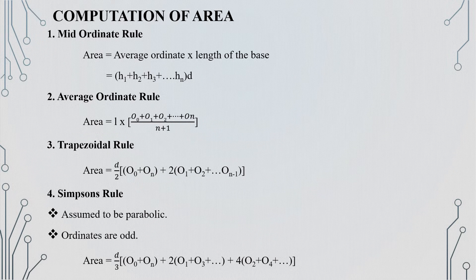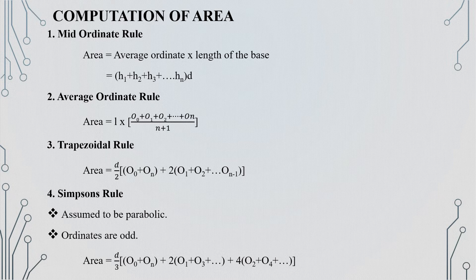Next, we use area computation equations. The first method is the Mid-Ordinate rule: area equals the average ordinate multiplied by the length of the base. The second method is the Average Ordinate method: area equals L multiplied by the sum of ordinates divided by n plus 1, where n is the number of ordinates and L is the length of the base.